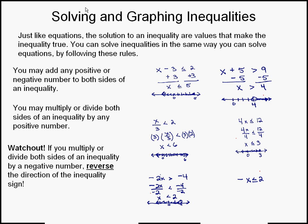Let's look at our last example: the inequality negative x is less than or equal to 2. Here, I'm going to divide both sides by negative 1. A negative divided by a negative is a positive, so I have just x. Reverse the inequality symbol, so my inequality becomes x is greater than or equal to negative 2. The solution includes negative 2 itself — it's going to be a darkened circle at negative 2, then highlight the number line going to the right.